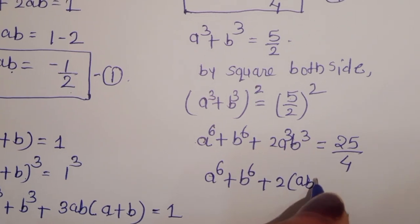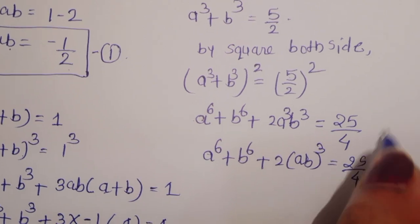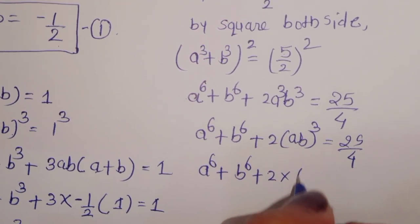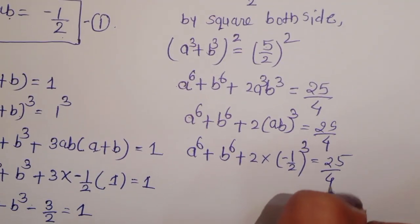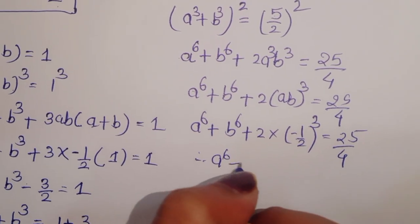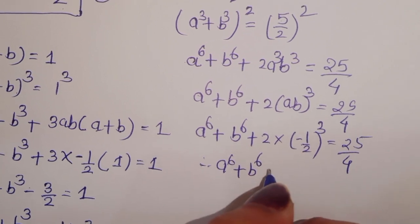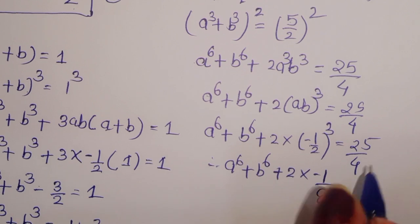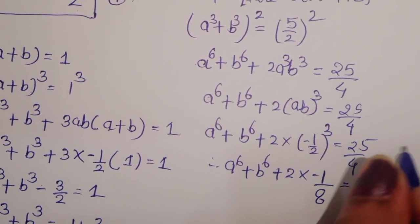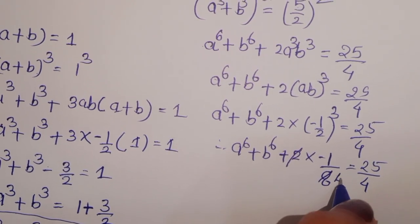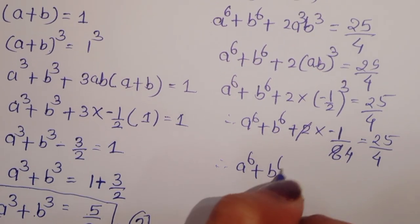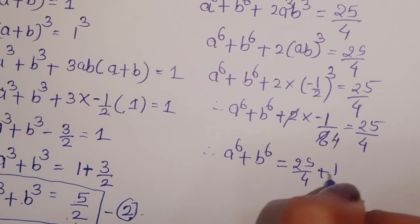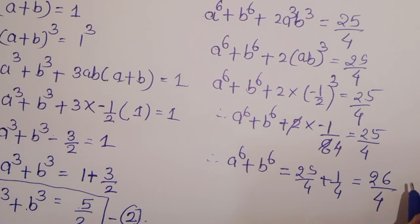Putting in the value of ab: a power 6 plus b power 6 plus 2 times (minus 1 upon 2)³ = 25 upon 4. Since (minus 1 upon 2)³ = minus 1 upon 8, we get a power 6 plus b power 6 plus 2 times (minus 1 upon 8) = 25 upon 4. Therefore a power 6 plus b power 6 is equal to 25 upon 4 plus 1 upon 4, which is 26 upon 4. This is equation 5.